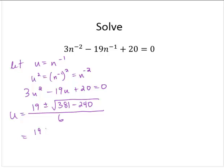So u would equal 19 plus or minus the square root of, oh, something's not right here. 19 squared is 361. So then we have the square root of 121 over 6.